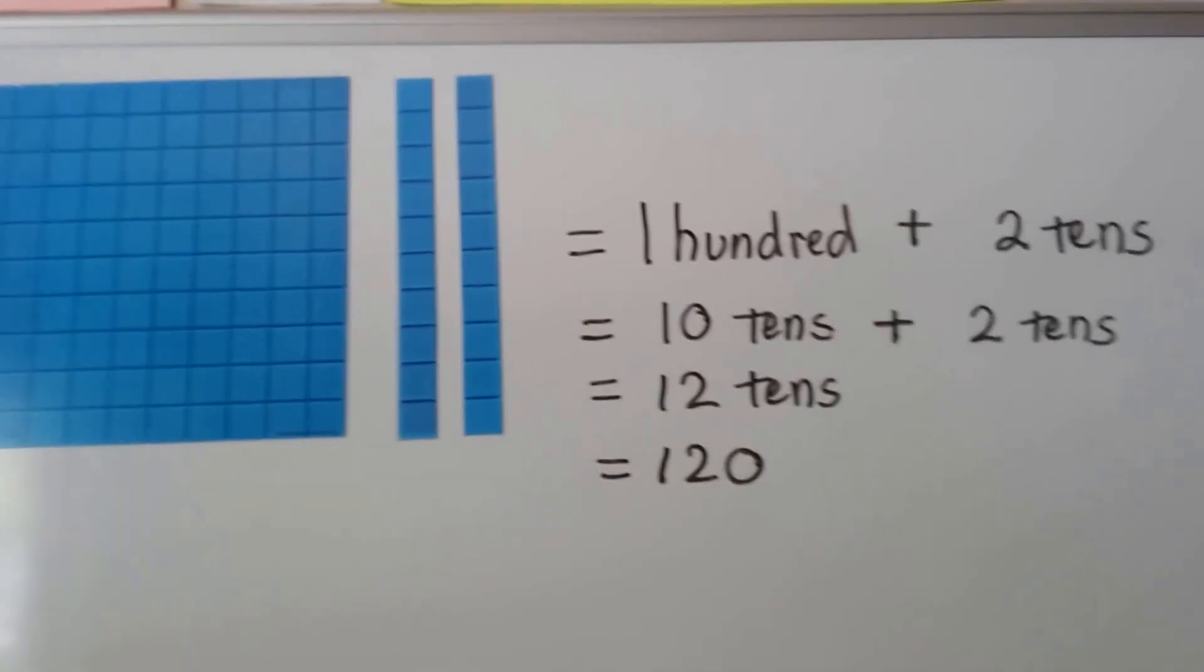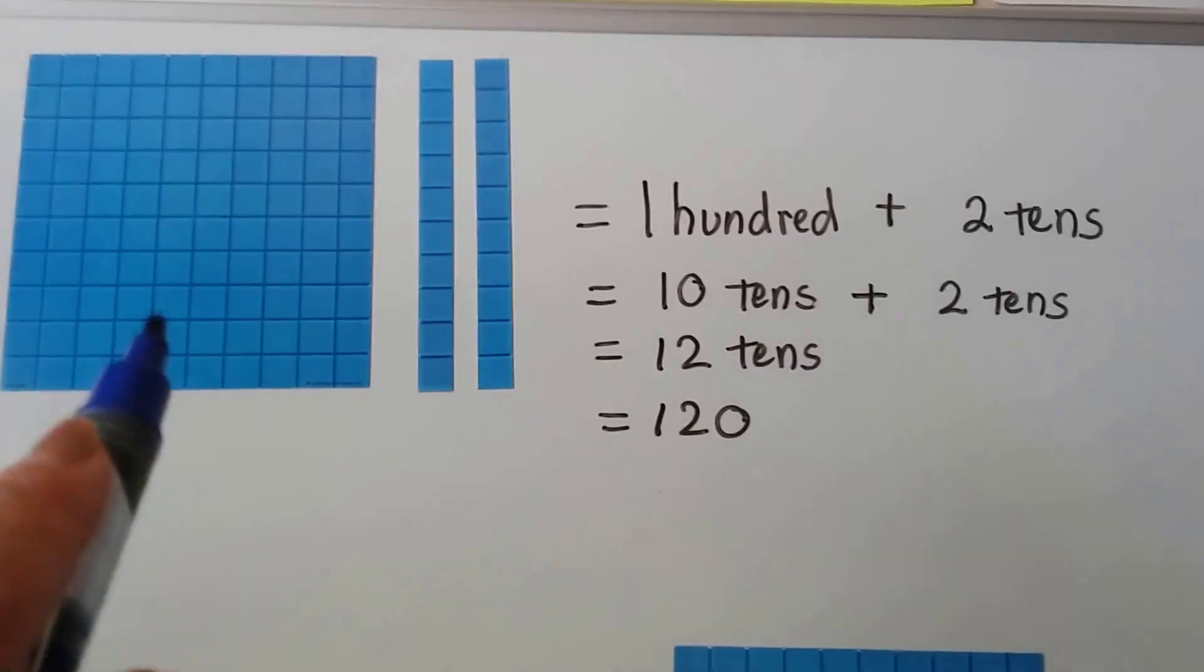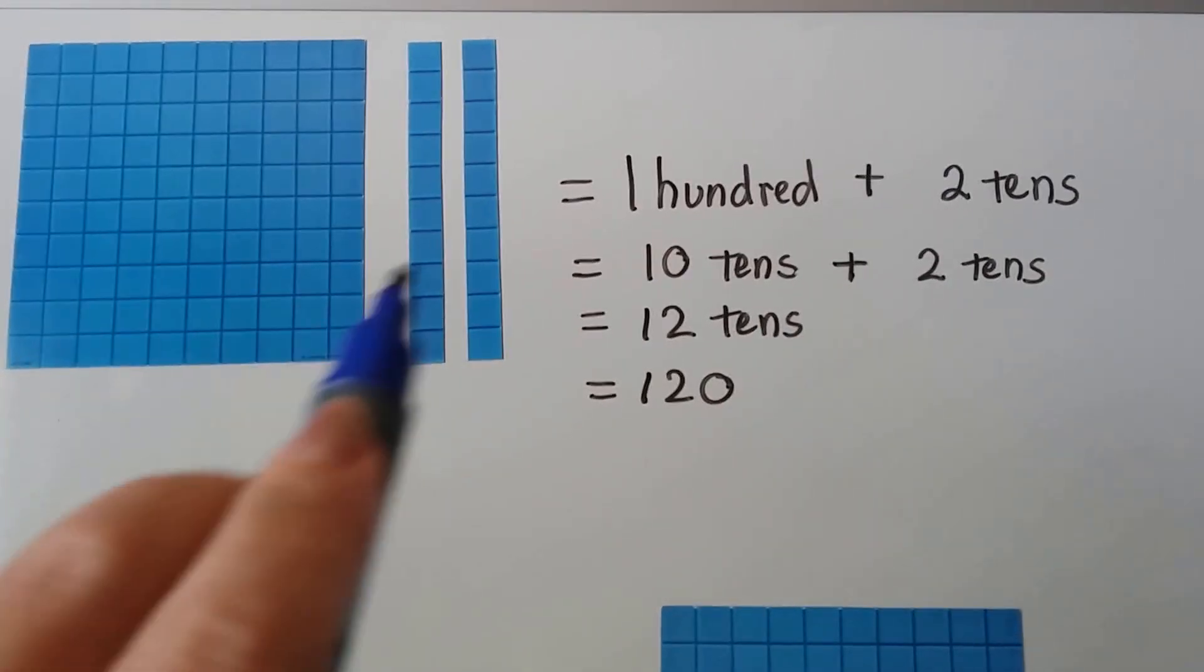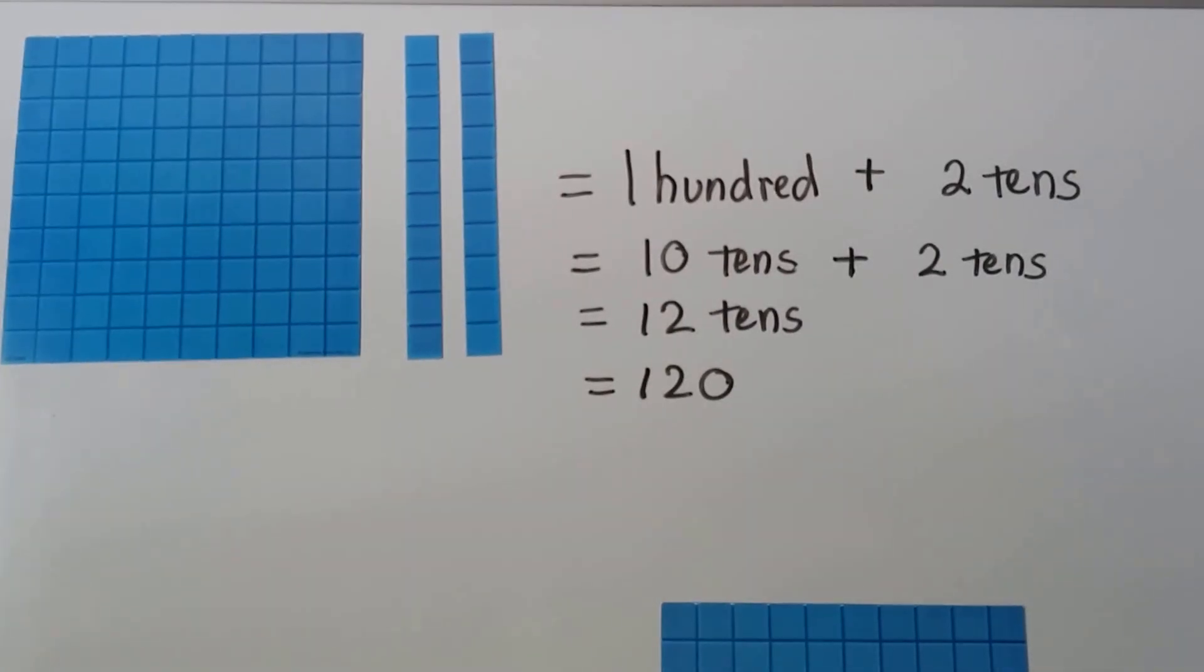So take a look at this. We have one hundred and two tens, so we have ten tens here and two tens here, right? So that's twelve tens. Well, that's the same thing as one hundred twenty.